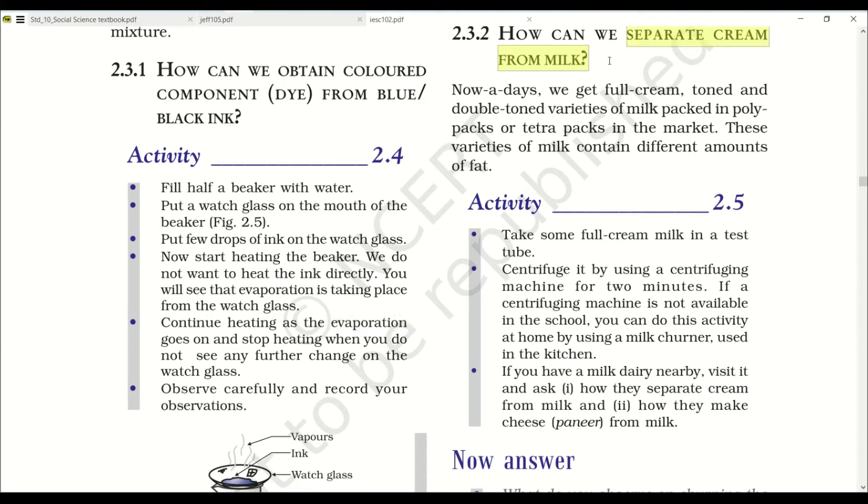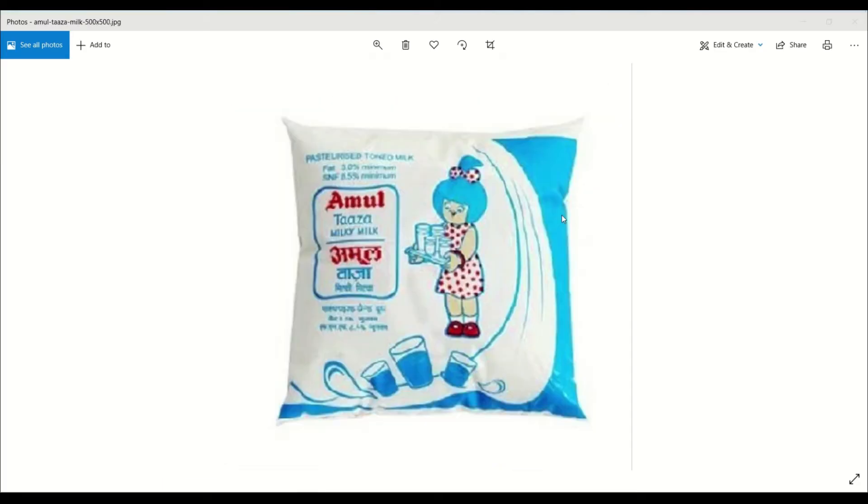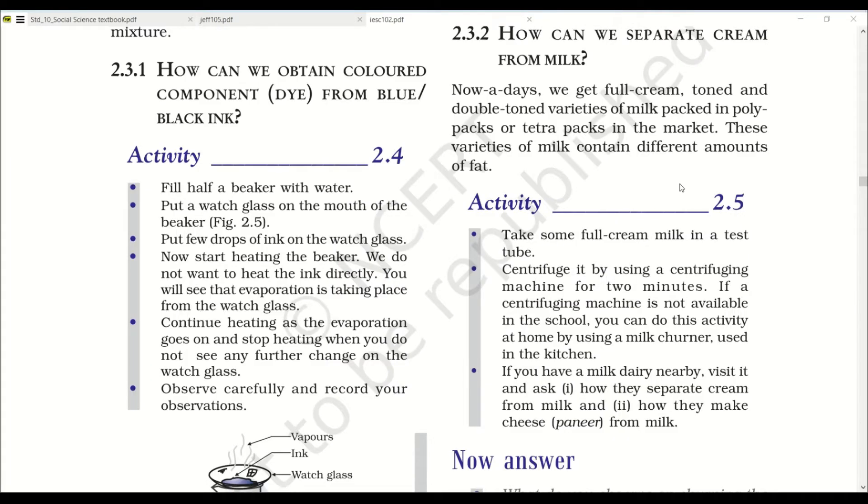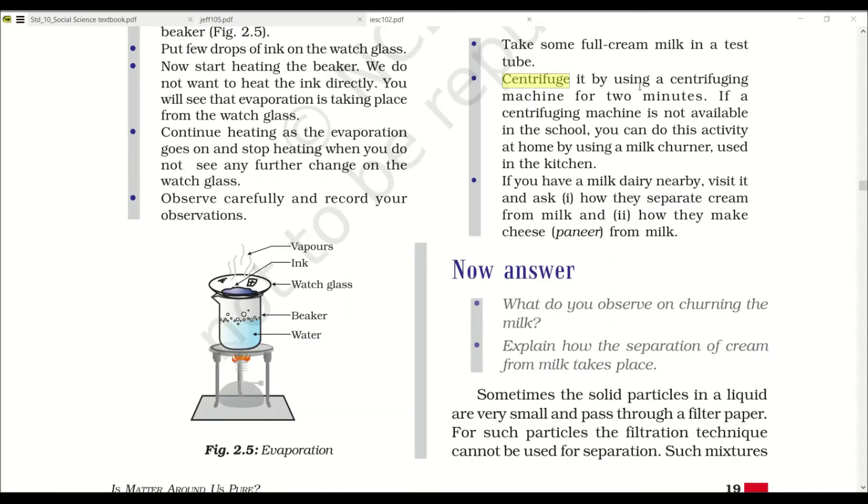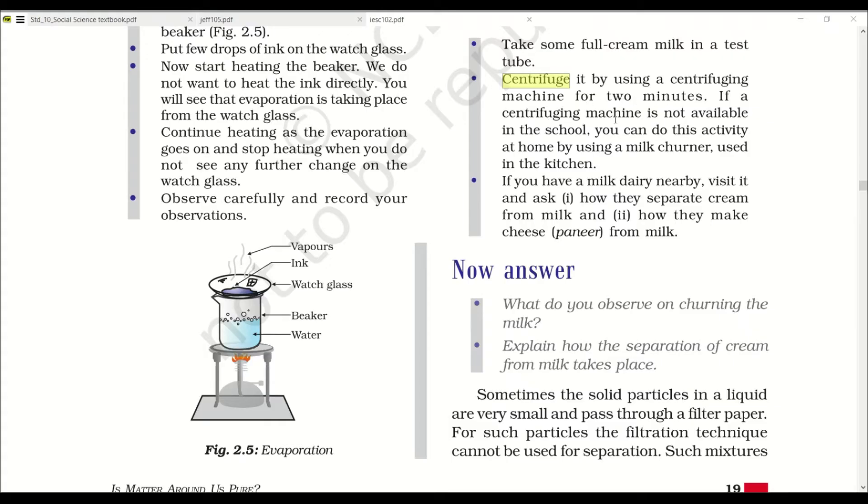Separation of cream from milk. Nowadays we get full cream, toned and double toned variety of milk packed in poly packs or tetra packs in the market. These varieties of milk contain different amounts of fat. If you have a milk dairy nearby, visit it and ask how they separate cream from milk and how they make cheese from milk.